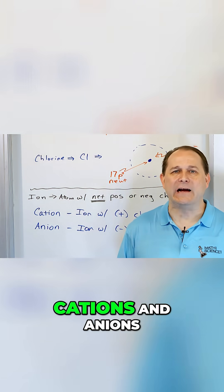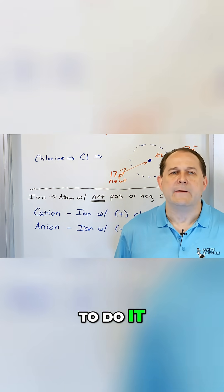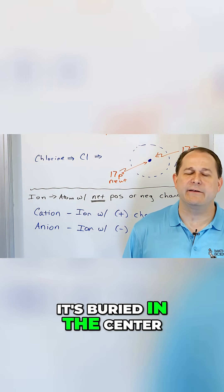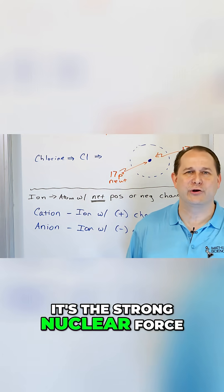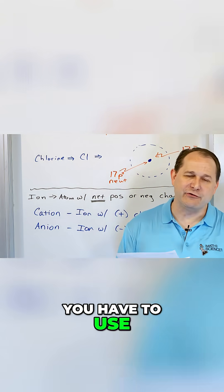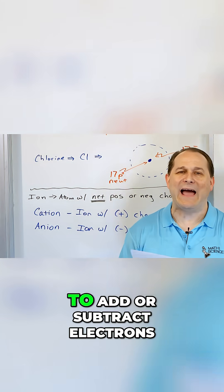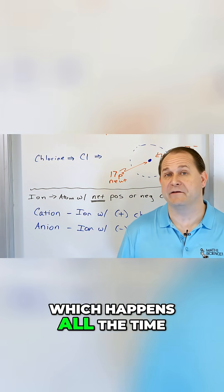How do you make cations and anions? Well, you're either going to add or subtract electrons. That's the only way to do it. You can't mess with the nucleus. It's buried in the center, and it's nuclear—it's the strong nuclear force. You're not going to pull a proton out, not with chemistry. You have to use a nuclear process for that, which is way more energy. So the only way to do it is to add or subtract electrons, which happens all the time.